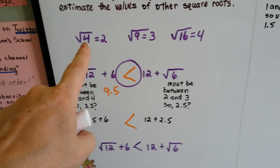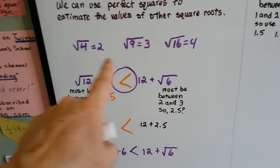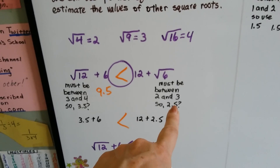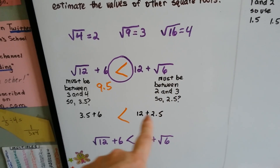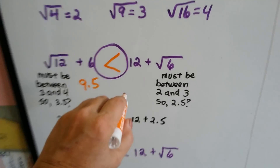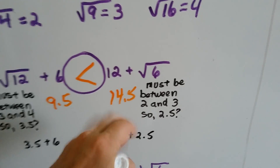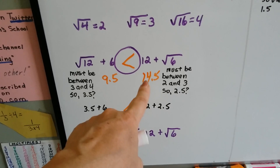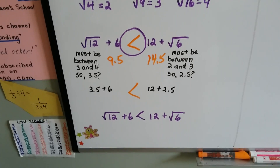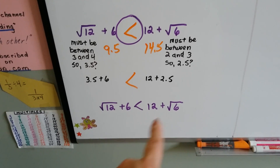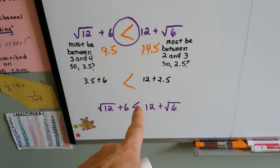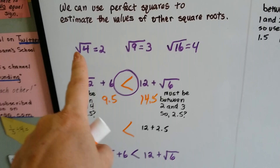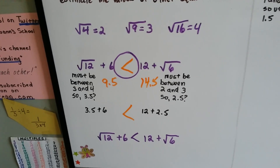Now we look at the square root of 6. That has to be between the square root of 4 and the square root of 9, so it's between 2 and 3. We use 2.5 for the square root of 6. So 12 plus 2.5 is 14.5. We know that 9.5 is less than 14.5 — that's an approximation — so we can rewrite this inequality as: the square root of 12 plus 6 is less than 12 plus the square root of 6. We used the perfect squares to find the values of the non-perfect squares.